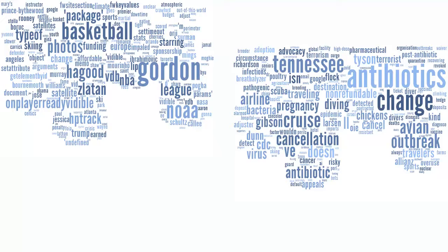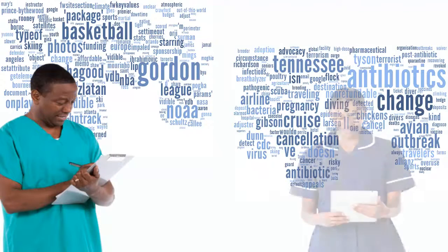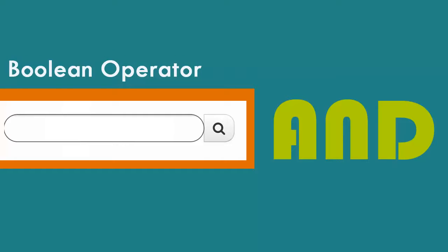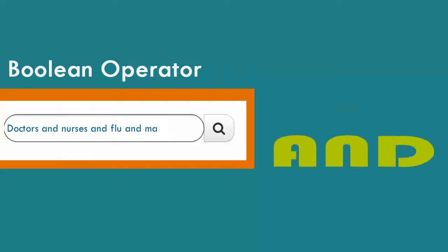But if you want specific information related to doctors and nurses getting flu shots, you'll need to narrow your search using Boolean operators. Narrow your search. AND is an example of a Boolean operator. Boolean operators are words you can use to connect your keywords systematically. As you add more keywords, the number of documents that contain all of the keywords is going to diminish.